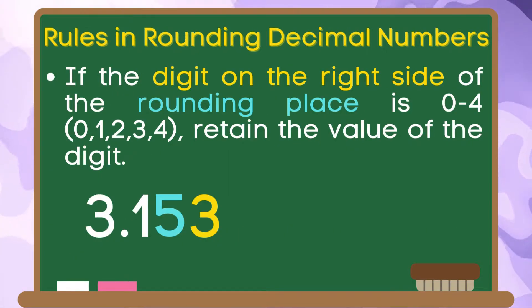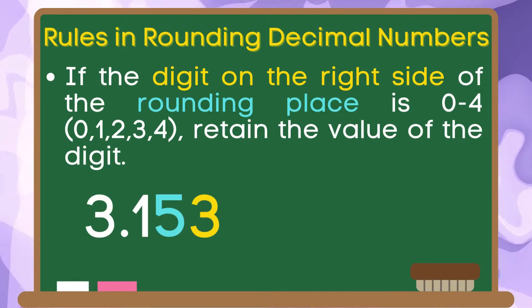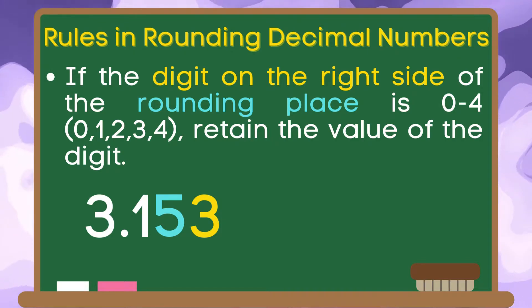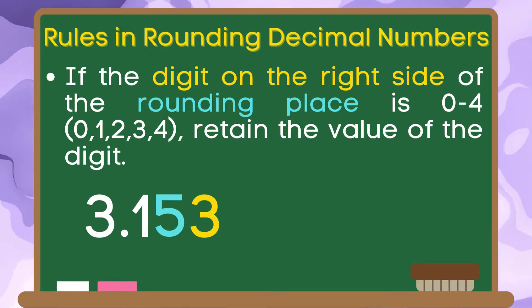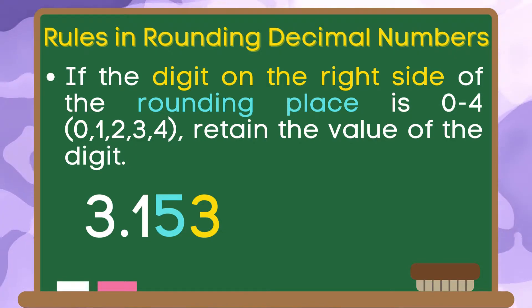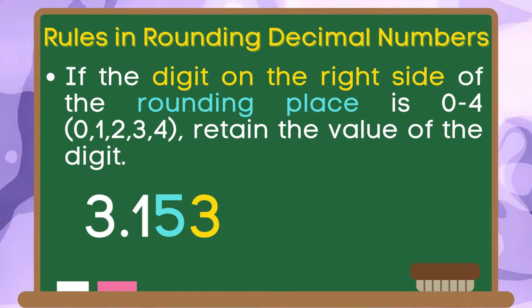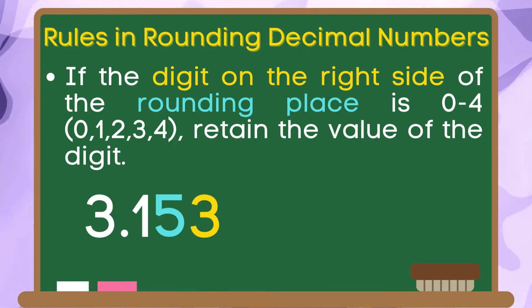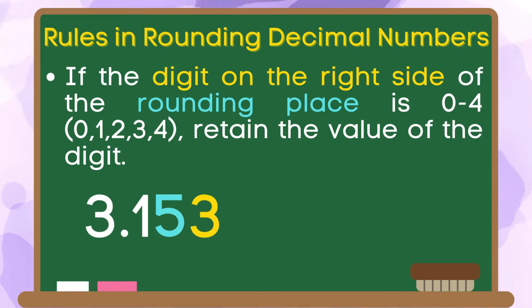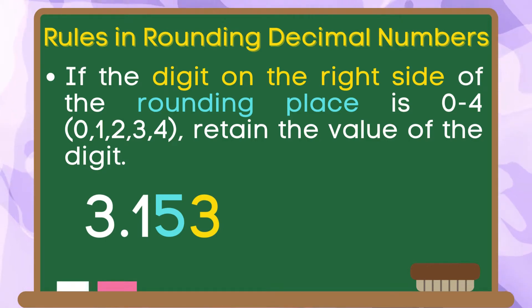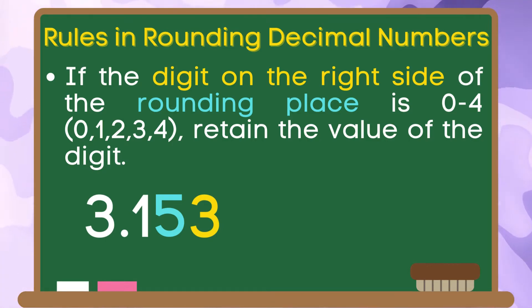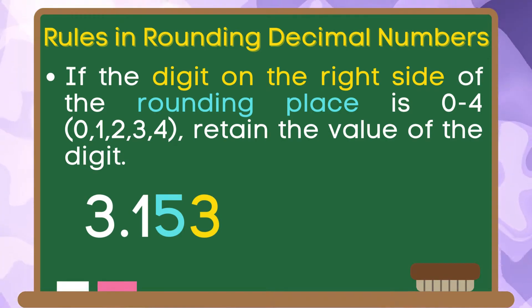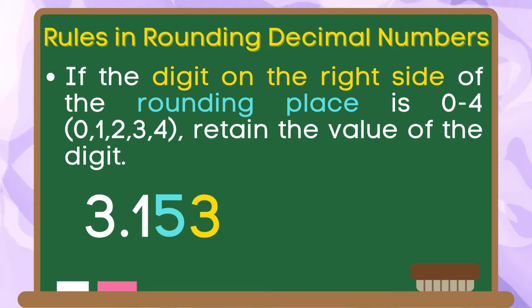Here are the rules in rounding numbers. If the digit on the right side of the rounding place is 0 to 4, retain the value of the digit. For example, we have here 3 and 153 thousandths. The digit that we are going to round is 5. The number at the right side of 5 is 3. Since 3 belongs to the group of 0 to 4, we are going to retain the value of 5 in the given number.